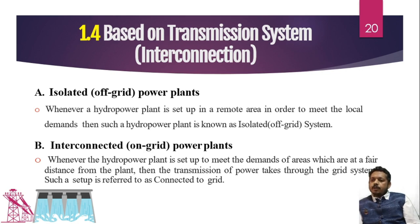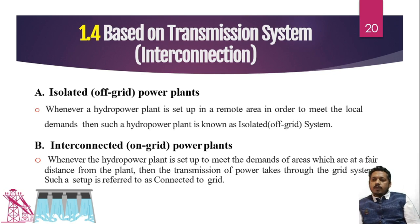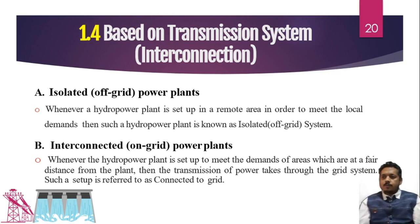What is the difference between both? Off-grid means this power plant is isolated in some remote region where our grid has not reached. The power generated in that region will be used locally for that area, rather than transmitting it somewhere else. So this is called an off-grid power plant.